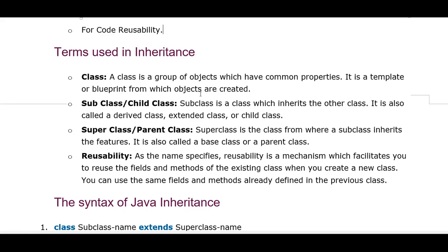A class is a template from which we create objects, where all objects will have the same variables, methods, and behavior. Next is subclass and child class. A subclass is a class which inherits another class - it is also called a derived class, extended class, or child class. A subclass acquires properties from a parent class, just like how we as children inherit properties from our parents - a bank account, mobile, and many other properties we take from them.